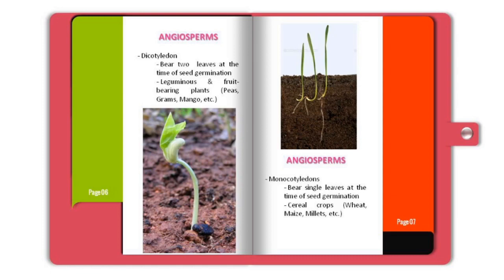Some plants are monocotyledons, meaning they bear a single leaf at the time of seed germination. You can clearly see the difference in both pictures — one has two leaves at germination while the other has a single one. Examples of monocotyledons include number of cereal crops such as wheat, maize, millet, etc.